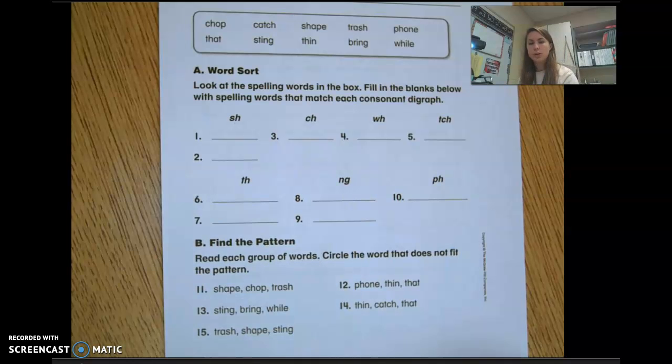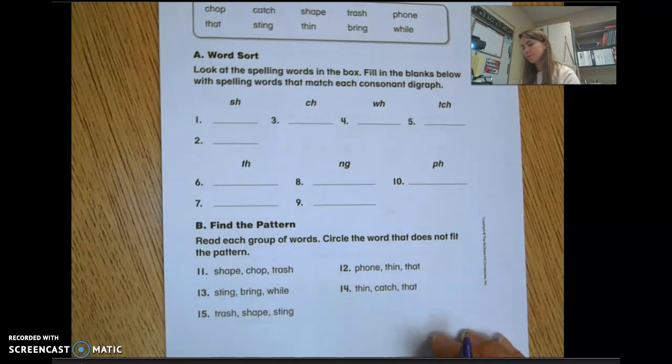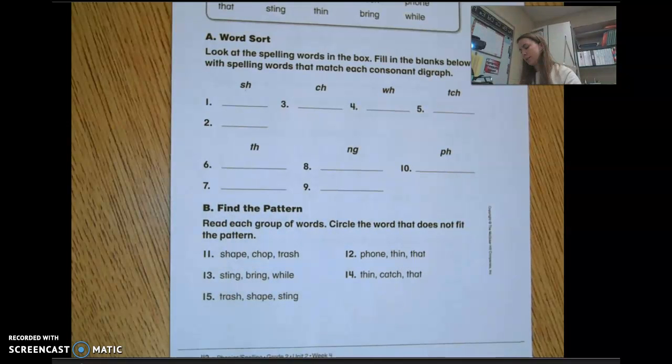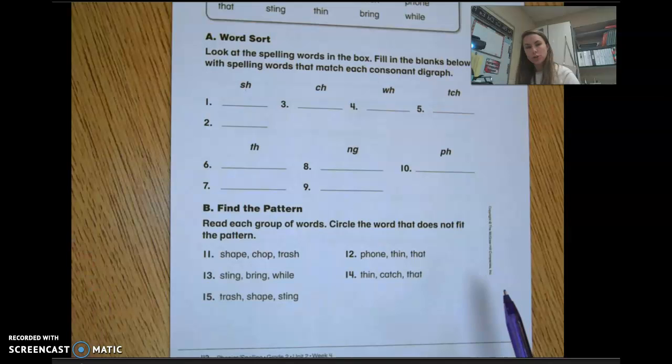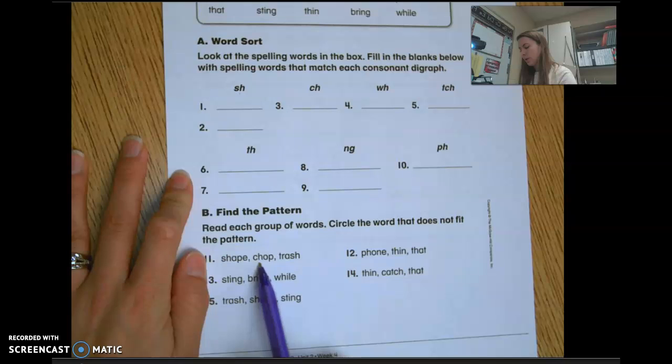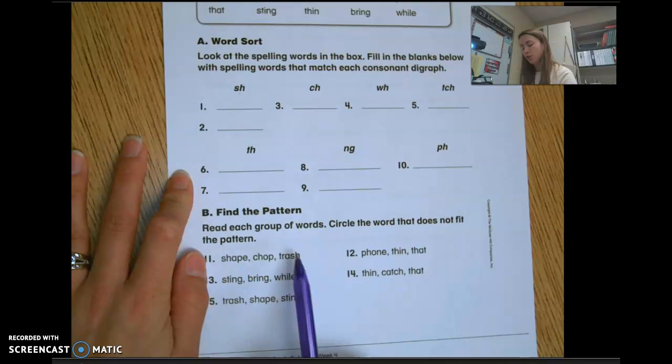You're going to sort those onto their correct lines. At the bottom, you're going to read each group of words and circle the word that does not fit the pattern. So you're going to circle one word that doesn't fit. If I look at shape, chop, and trash, I'm going to circle chop because it doesn't have an sh sound like shape and trash do. It has a ch sound.